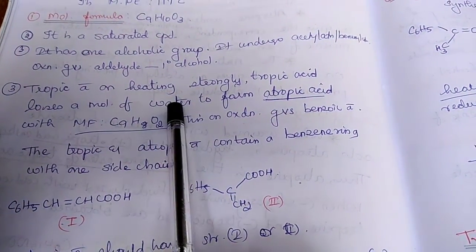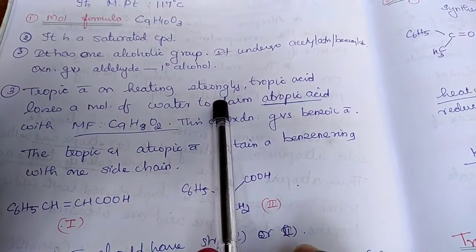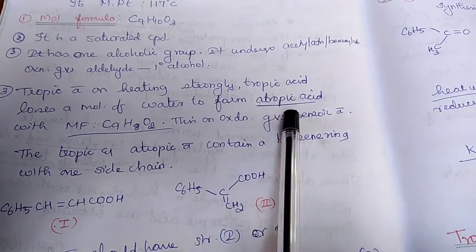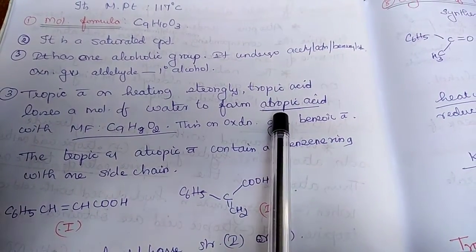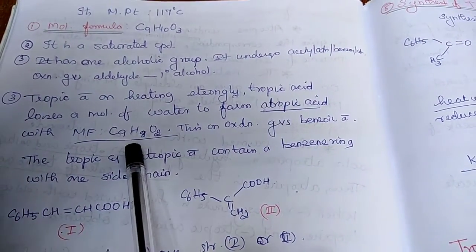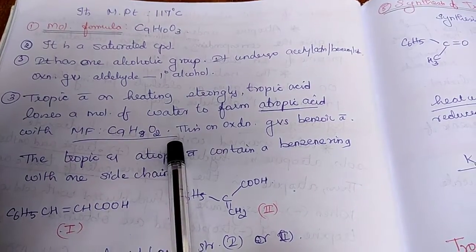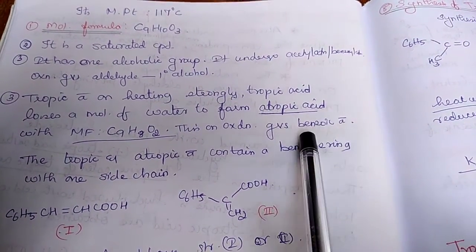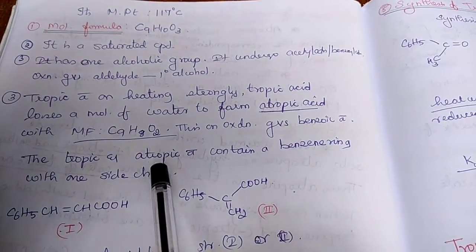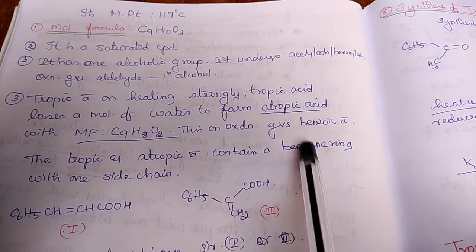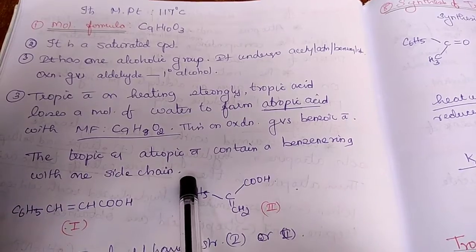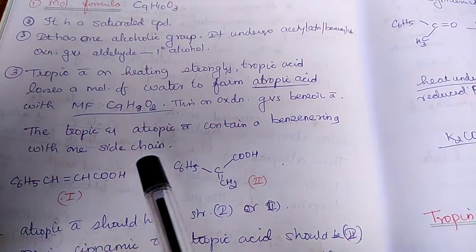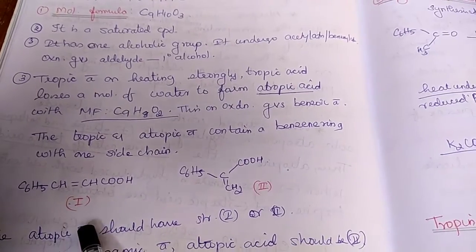And the next step, tropic acid on heating strongly removes the molecule of water to form atropic acid. The molecular formula of atropic acid is C9H8O2. This on oxidation forms benzoic acid. So from this we can confirm that atropic acid contains a benzene ring with one side chain. So atropic acid can take two forms from the above facts, either one or two.